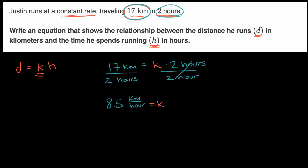And so if we go back to the original question, which asks us to write an equation that shows the relationship between d and h, we can say that d is equal to, we now know our proportionality constant, 8.5 times h, and we're done.